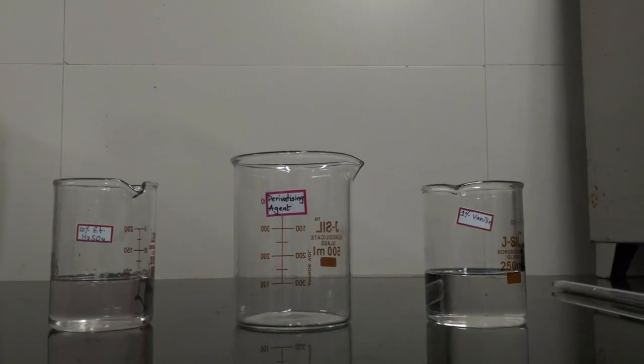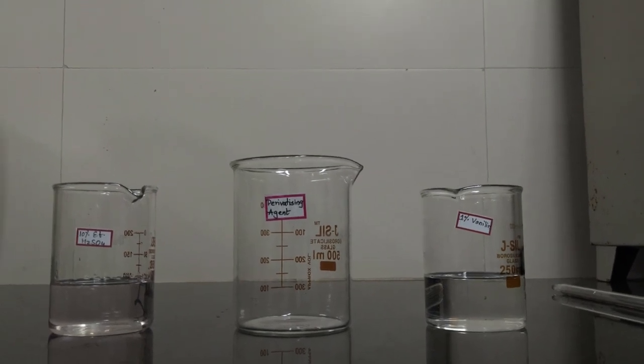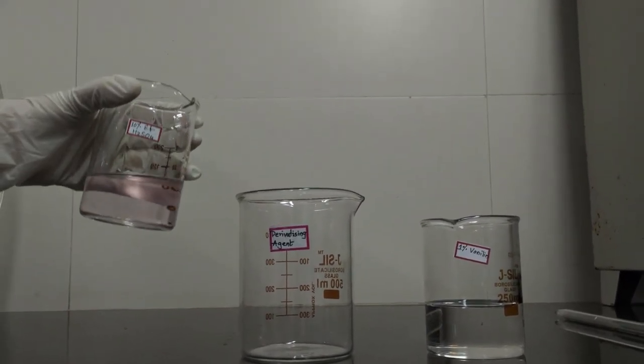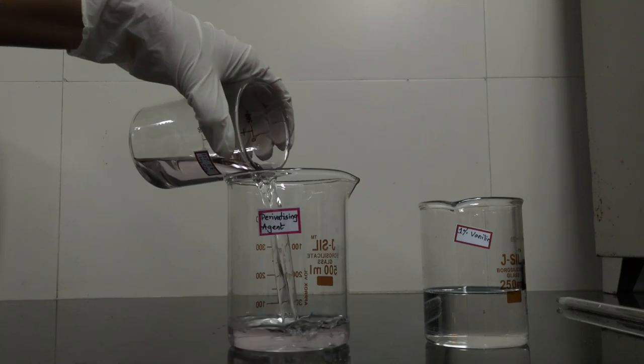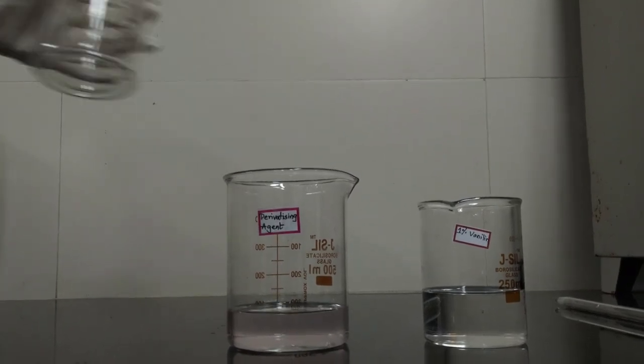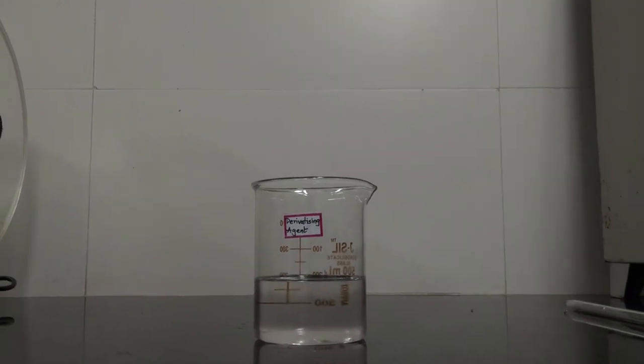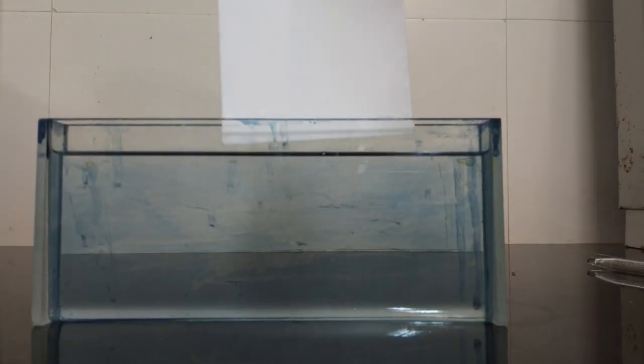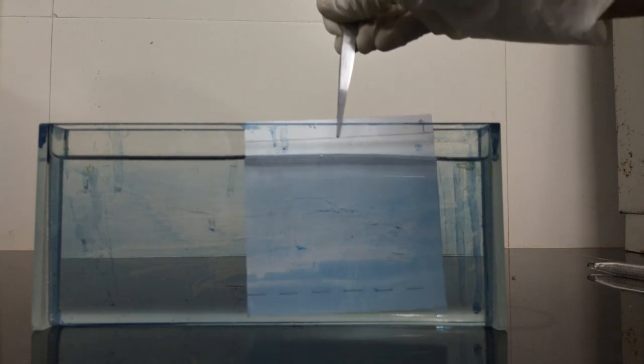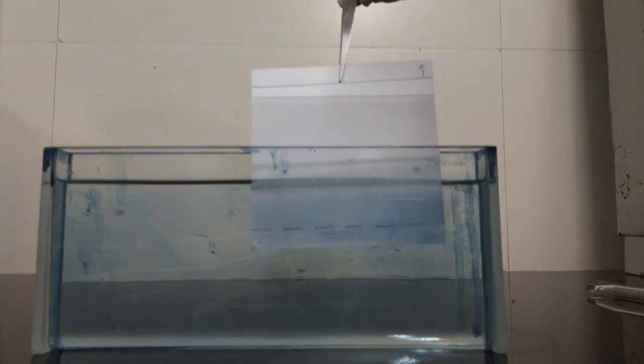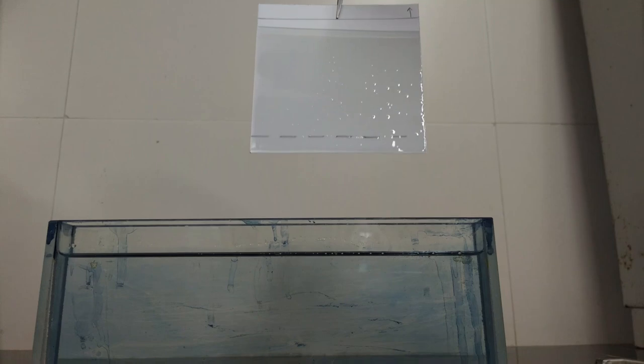The derivatizing agent used is vanillin sulfuric acid, which is prepared by dissolving 1 gram of vanillin in 90 ml of IPA and 10 ml of H2SO4. Out of the two methods, which are dipping and spraying, we will be using the dipping method, following which we will be keeping our plates in the oven at 110 degrees Celsius because the reaction takes place at this temperature.